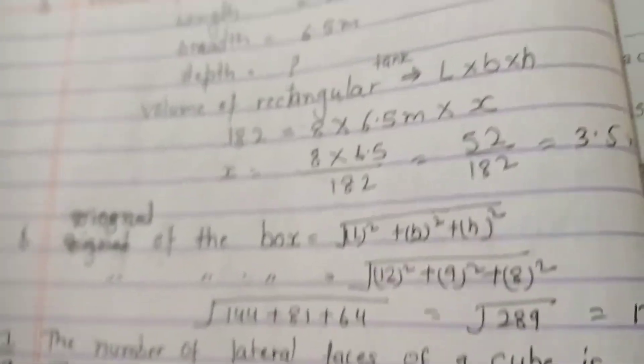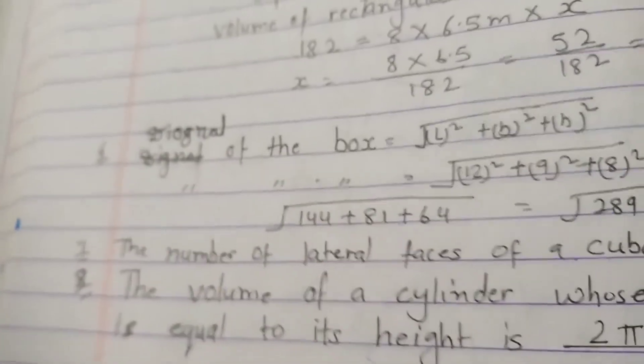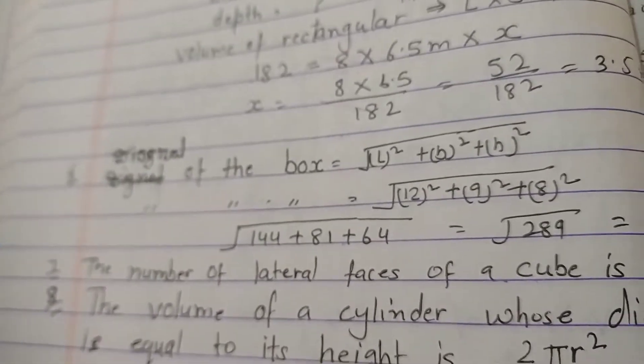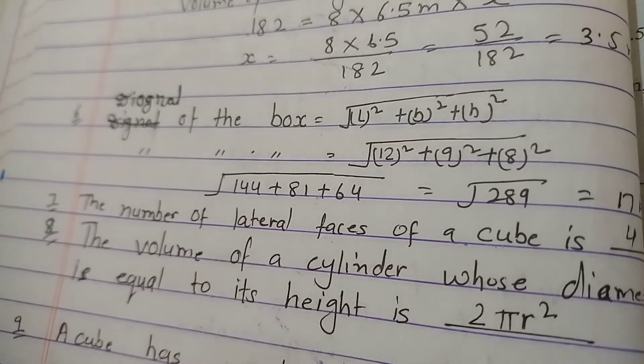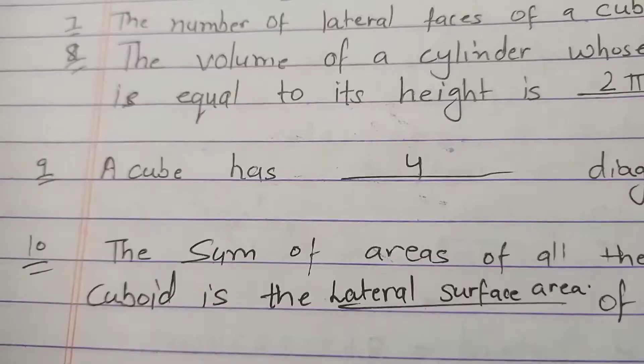Let's move to the next question, which is question 7: the number of lateral faces of a cube is? So the answer is four.